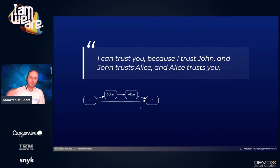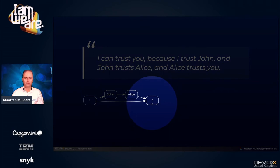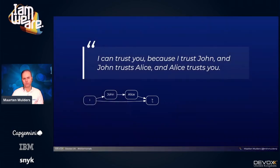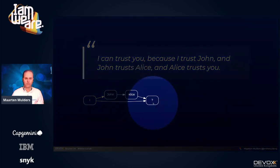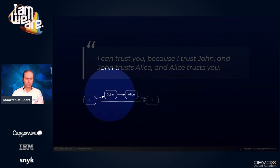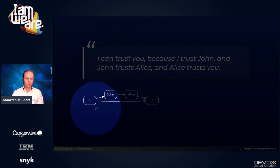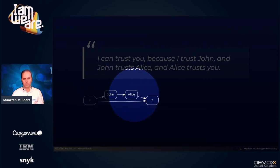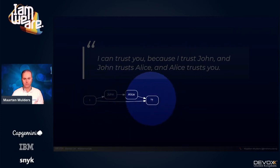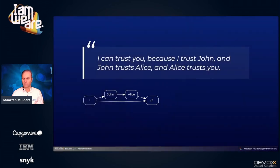What happens is I'm talking to somebody I haven't met before and I'm wondering: can I trust them? The answer is that they are trusted by Alice, Alice happens to be trusted by John, and I know John very well and I trust him. So given that I trust John and John trusts Alice, I can trust this person I've never met. That sounds good and fine.